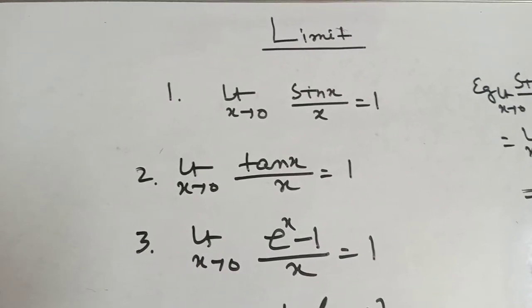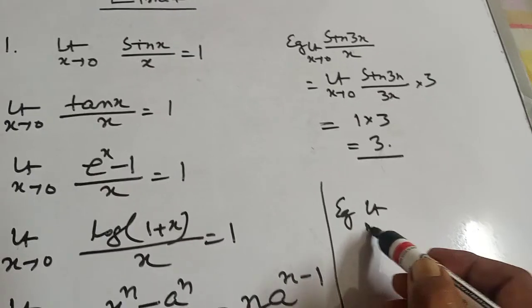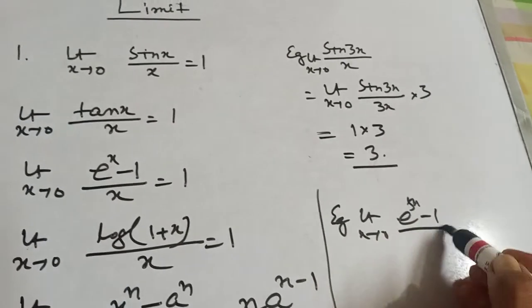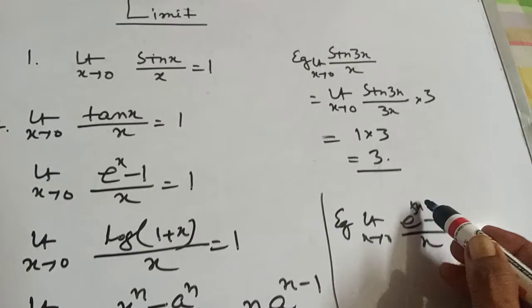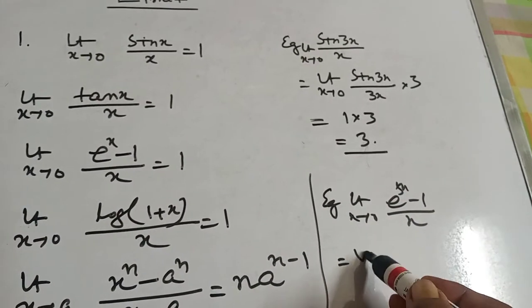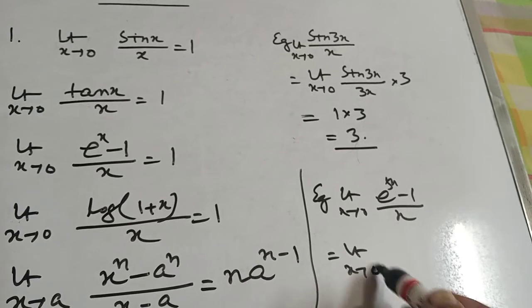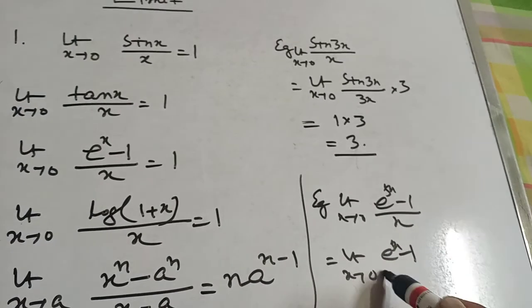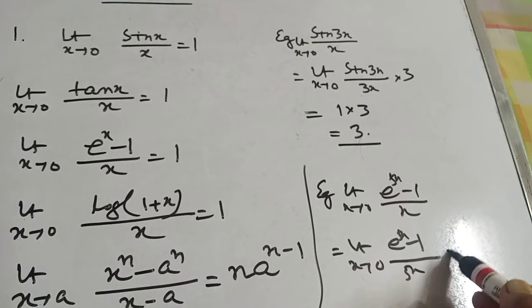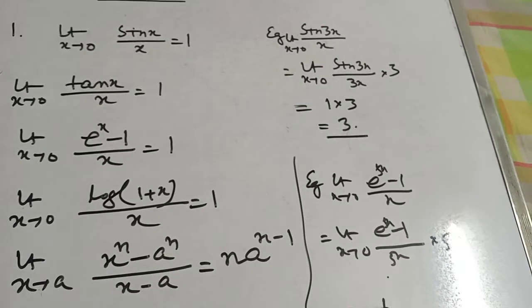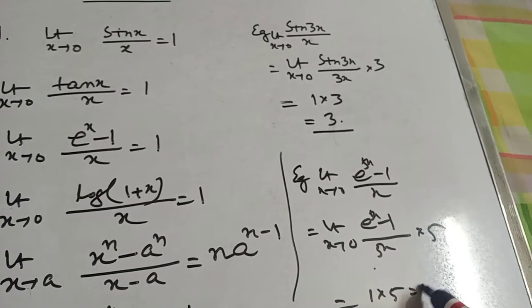One more example. Limit x tends to 0, e to the power 5x minus 1 by x. Here the numerator has 5x but the denominator is x. Adjust it: limit x tends to 0, e to the power 5x minus 1 by 5x, into 5. That means this part equals 1, so 1 into 5 equal to 5.